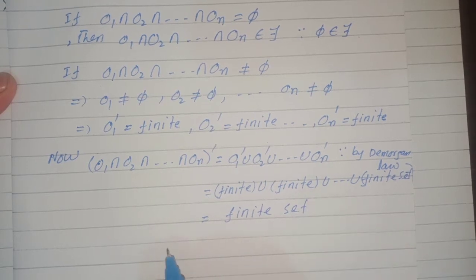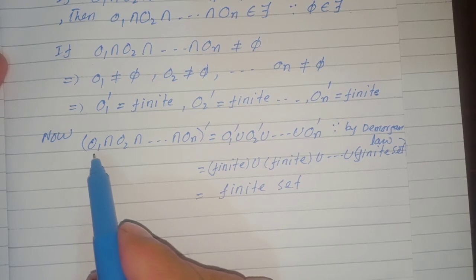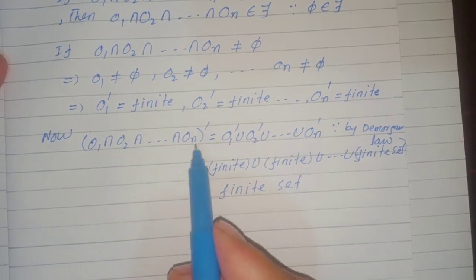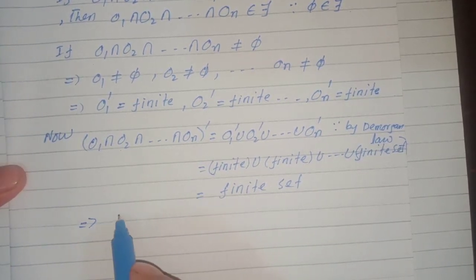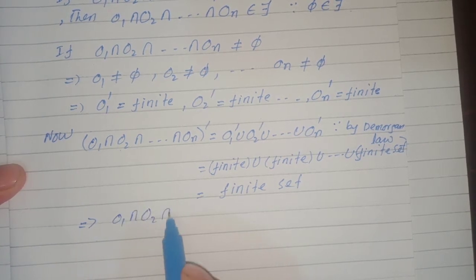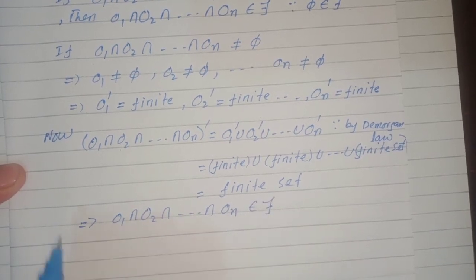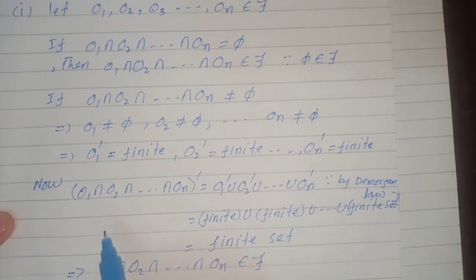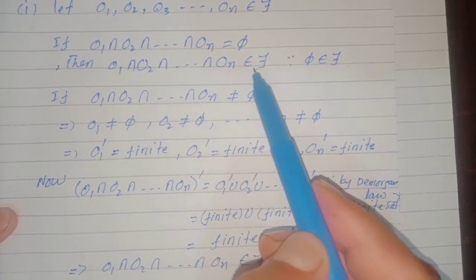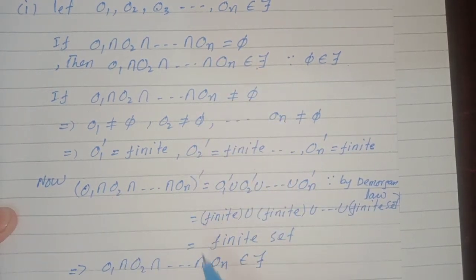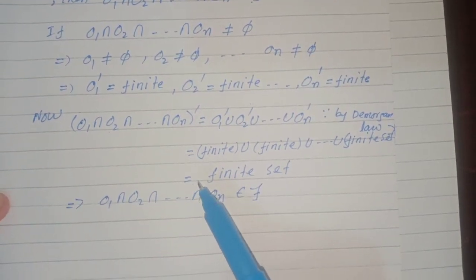Therefore, the complement of O₁ ∩ O₂ ∩ ... ∩ Oₙ is finite, which implies O₁ ∩ O₂ ∩ ... ∩ Oₙ belongs to τ. So in both cases we have proved that if the intersection is empty it belongs to τ, and if the intersection is non-empty it also belongs to τ. Therefore the first condition of topology is satisfied.